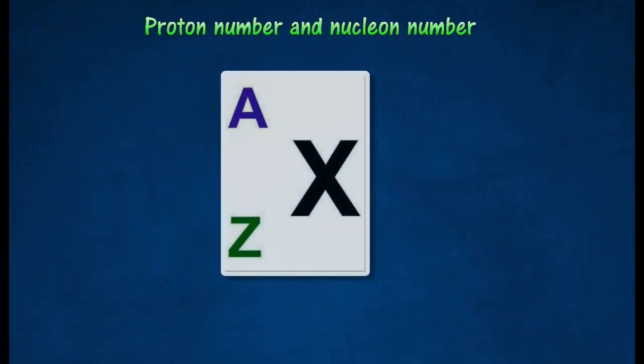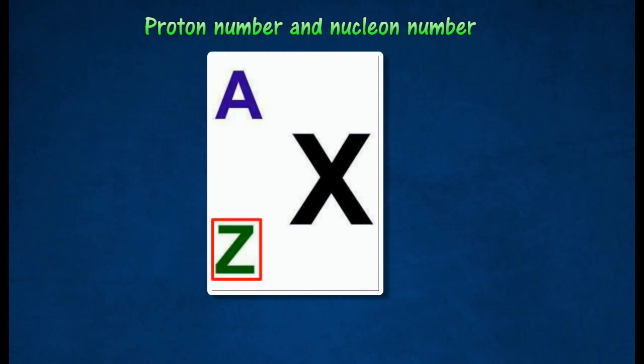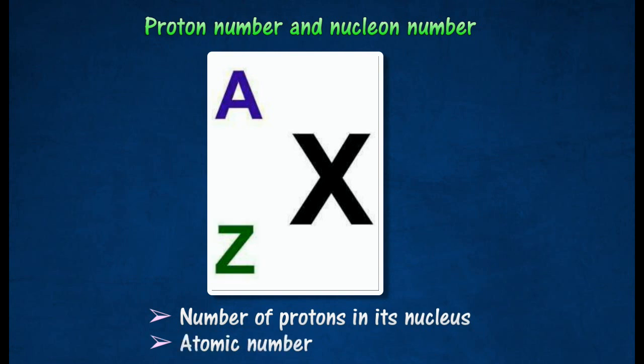Proton number and nucleon number. The proton number of an atom is defined as the number of protons in its nucleus. It's also known as atomic number.